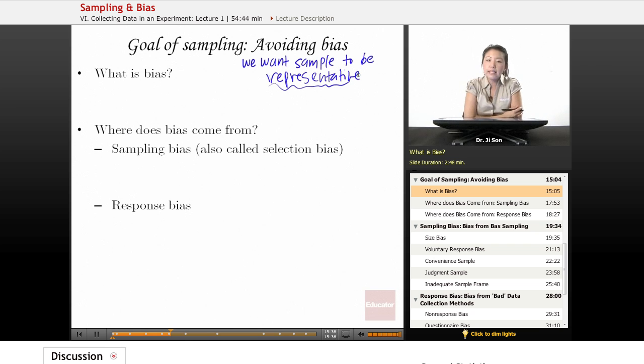Bias means that our sample is not representative. That somehow our sample is giving us values that are too small or too large or skewed in some way away from the population.